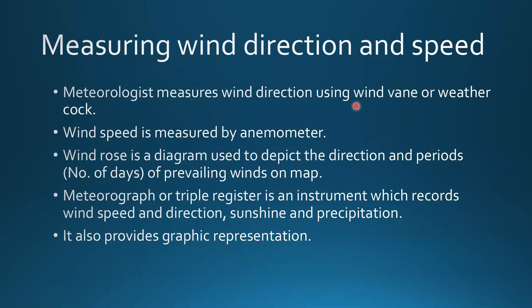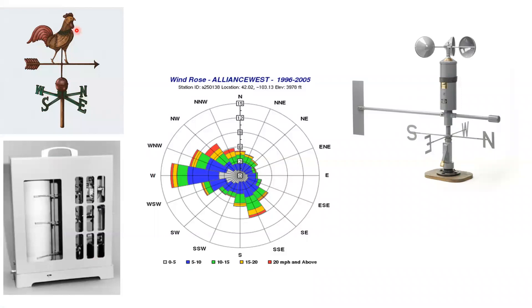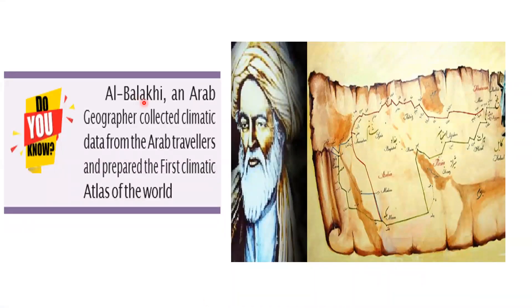Meteorologists measure wind direction using a wind vane or weather cock, and wind speed using an anemometer. A wind rose is a diagram used to depict the direction and periods of prevailing winds on a map. A meteorograph, also called a tripling register, is an instrument that records wind speed and direction, sunshine, and precipitation, and also provides a graphic representation. Al-Balkhi was an Arab geographer who collected climatic data from many Arab travelers and sailors and prepared the first climatic atlas of the world.